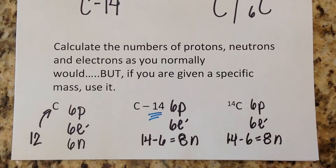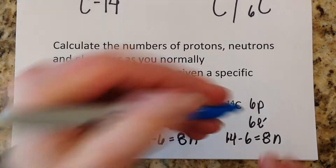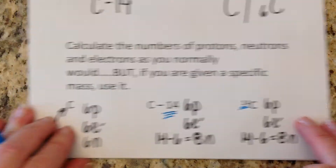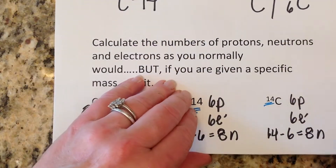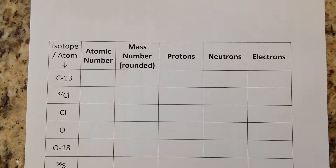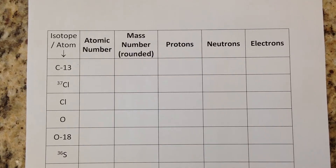Just remember: if they give you the mass, use it to calculate your number of neutrons. If you're not given a specific mass, just refer to the periodic table, round that mass, and use it to determine your number of neutrons. We're going to do a little more practice on this — it's super easy, very much like regular proton-neutron-electron calculations. We'll fill out a chart to keep everything organized.